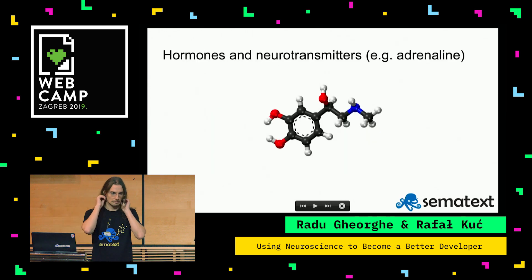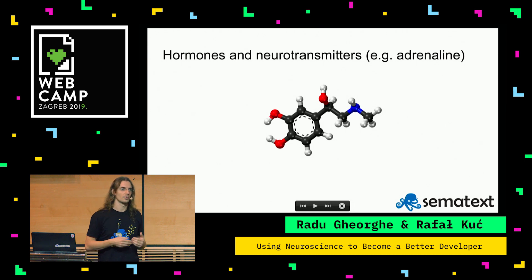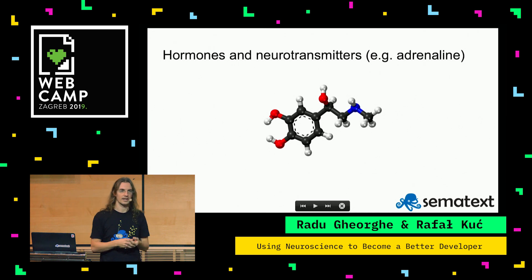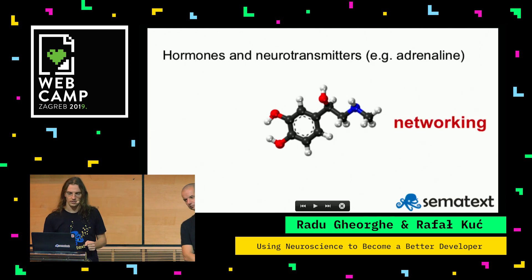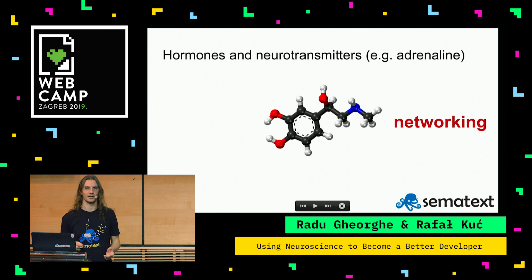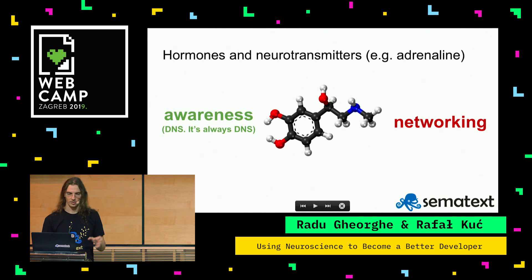The third thing I want to talk about is hormones and neurotransmitters. For example, adrenaline is a bit of both. When we're stressed, we get adrenaline in our blood, which has lots of effects: our connections in the brain get faster, we get insulin in the blood which digests carbs into glucose — all of that to make us either fight or flight. The way I think about hormones is kind of like networking — we need to be aware of it so it doesn't become a bottleneck.